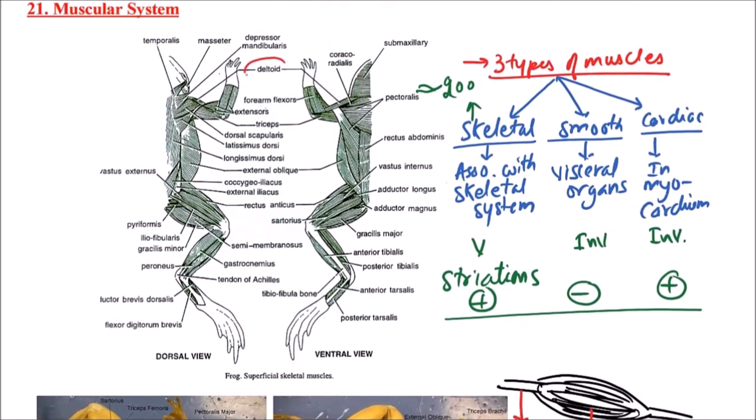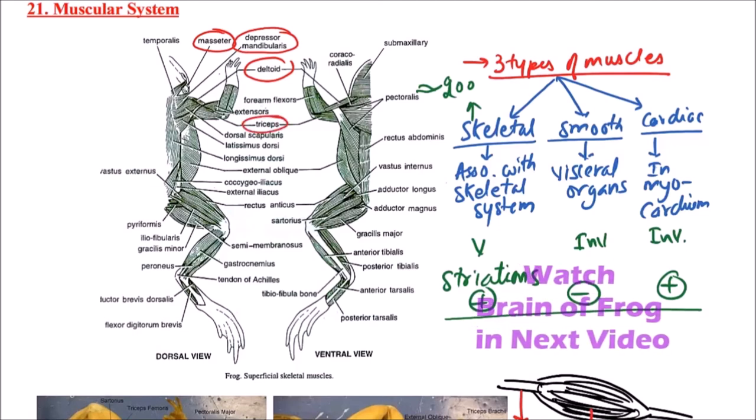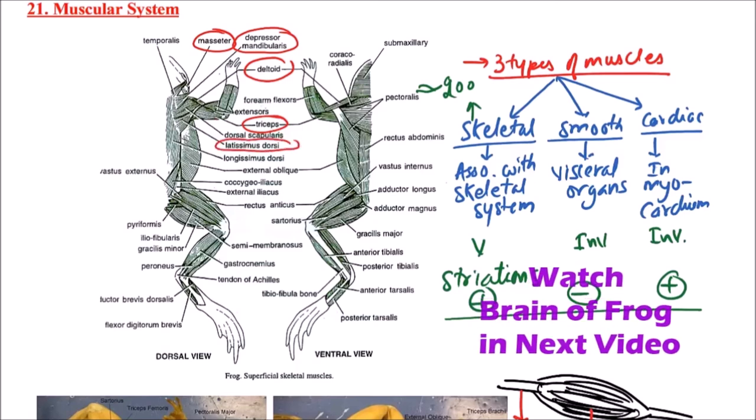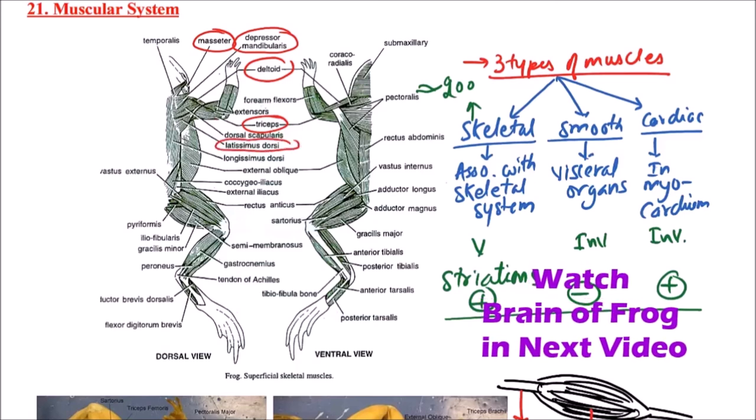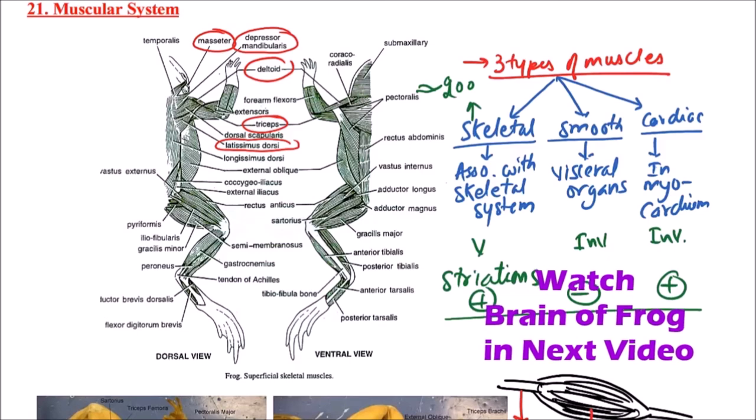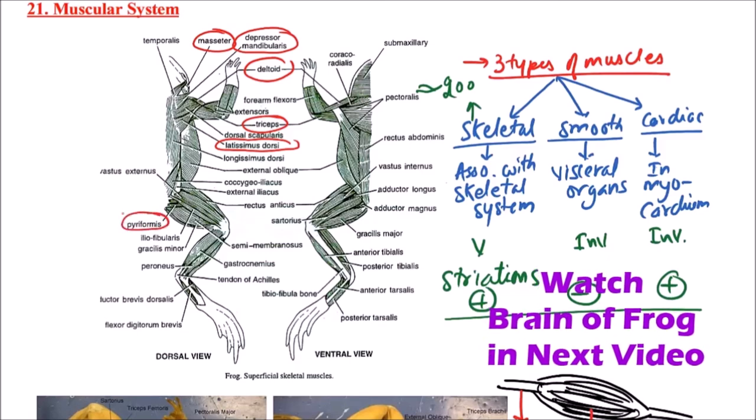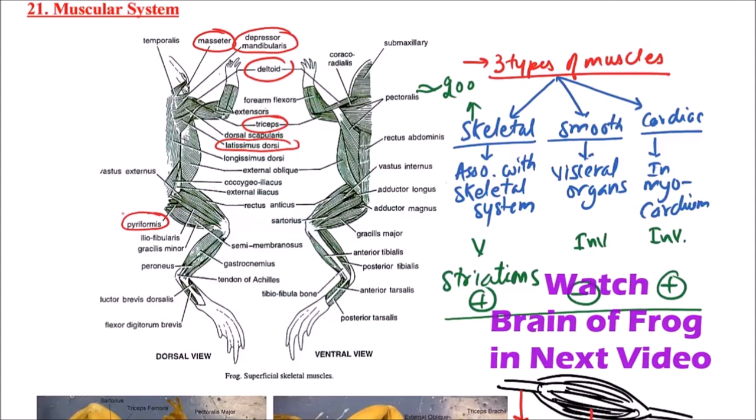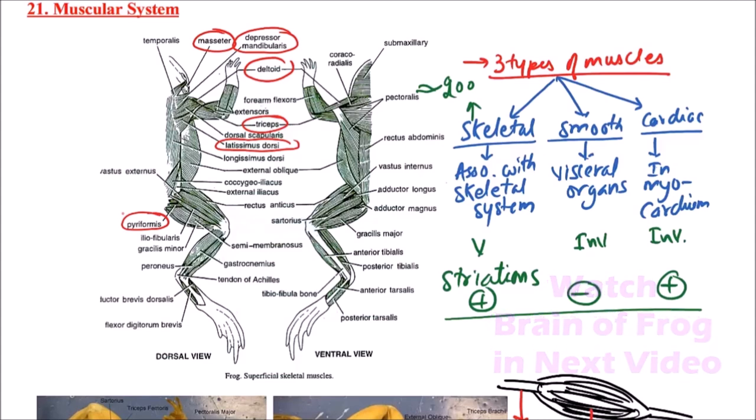We can observe these muscles here. This is deltoid muscle which is abductor, masseter which is elevator, depressor mandibularis that is depressor muscle, and here the triceps are extensors. While this one is latissimus dorsi the adductor muscles, and this is the piriformis that is rotator. So these are the various types of muscles in the body of frog. Thanks for watching this video.